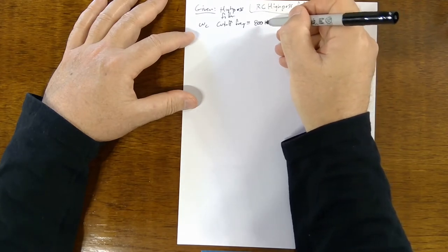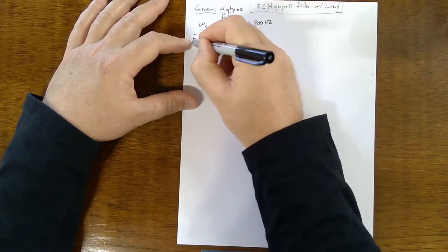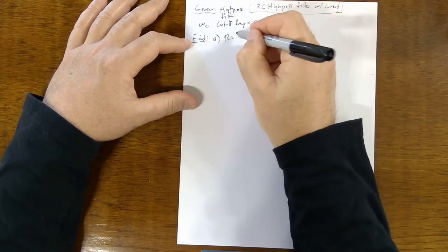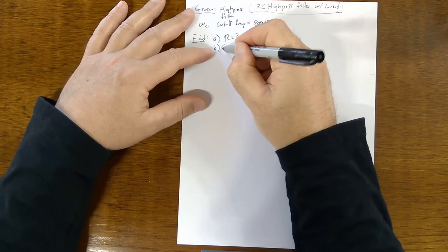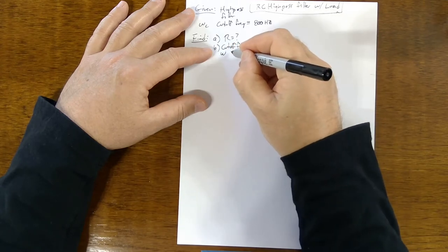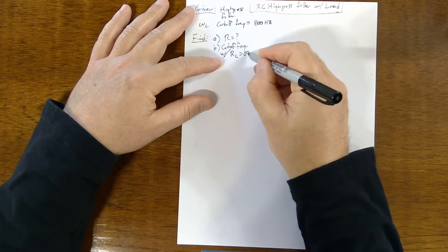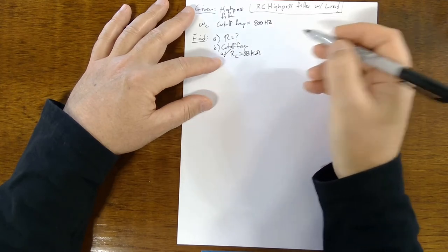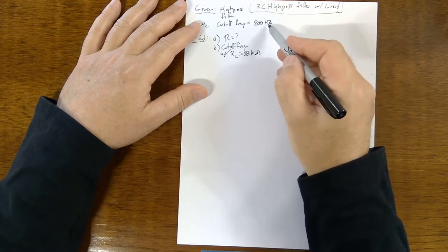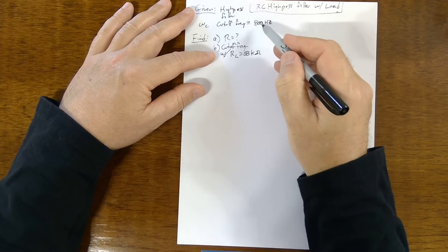We're asked to find the resistance of this high-pass filter, and then how does the cutoff frequency change when you add a resistive load with a resistive load of 68 kilohms. We'll have a high-pass filter that has 800 Hertz cutoff frequency, but then we're going to hook it up to a load, in this case just a resistive load, and how does that change the cutoff frequency.